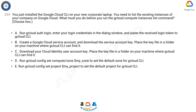C. Download your Cloud Identity User Account key. Place the key file in a folder on your machine where Cloud CLI can find it. D. Run Cloud Config Set Compute/Zone $MY_ZONE to set the default zone for Cloud CLI. E. Run Cloud Config Set Project $MY_PROJECT to set the default project for Cloud CLI.